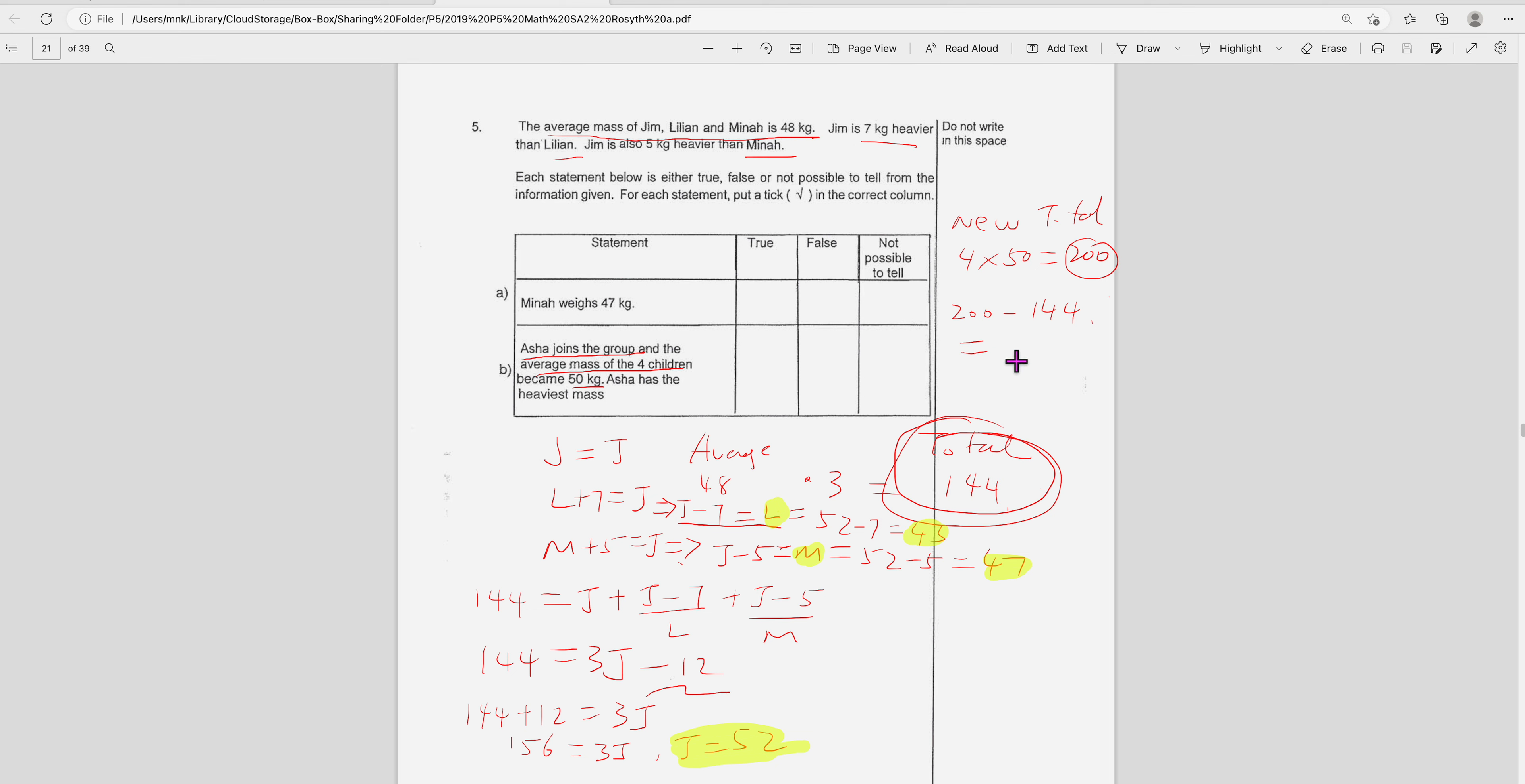Can you use your calculator? I think you made a mistake here. It should be 144. So 200 minus 144 is 56. So that's Asha's weight.